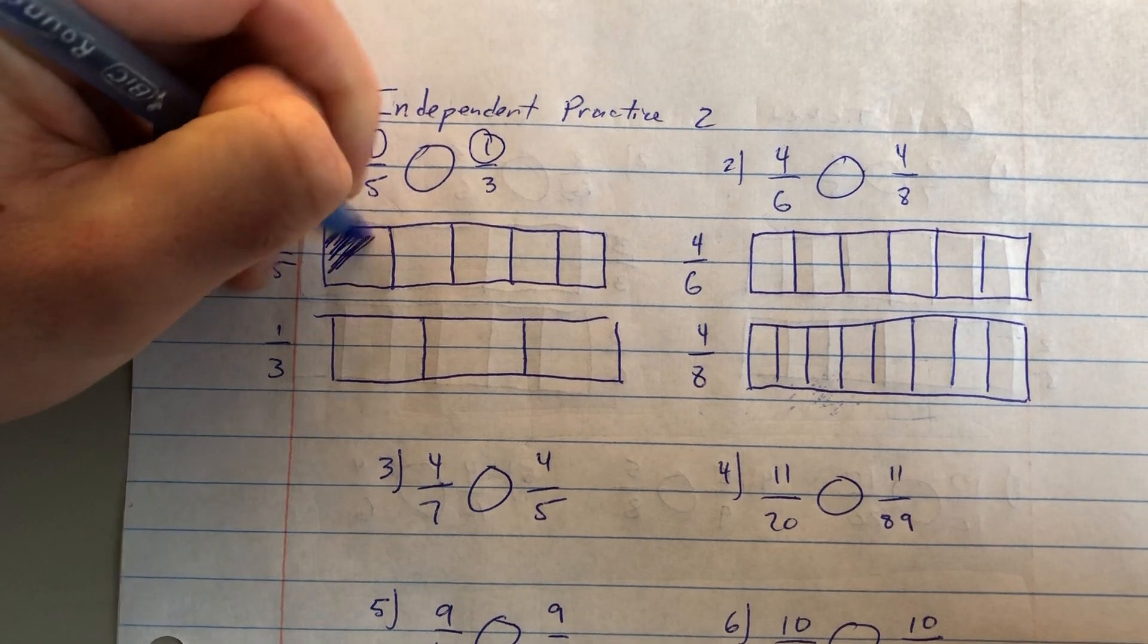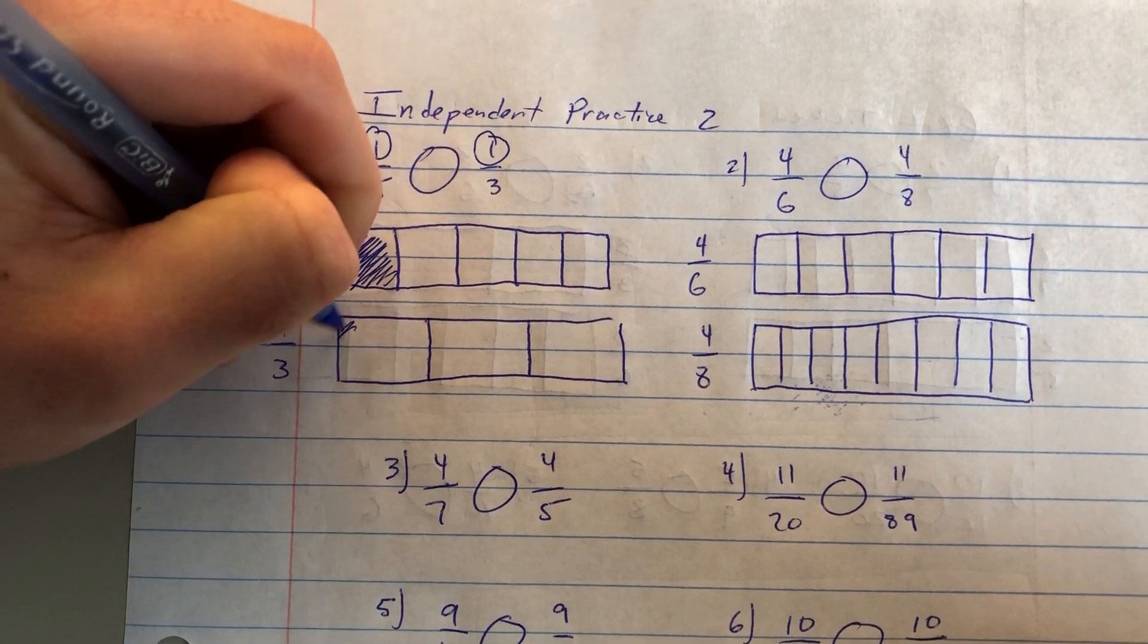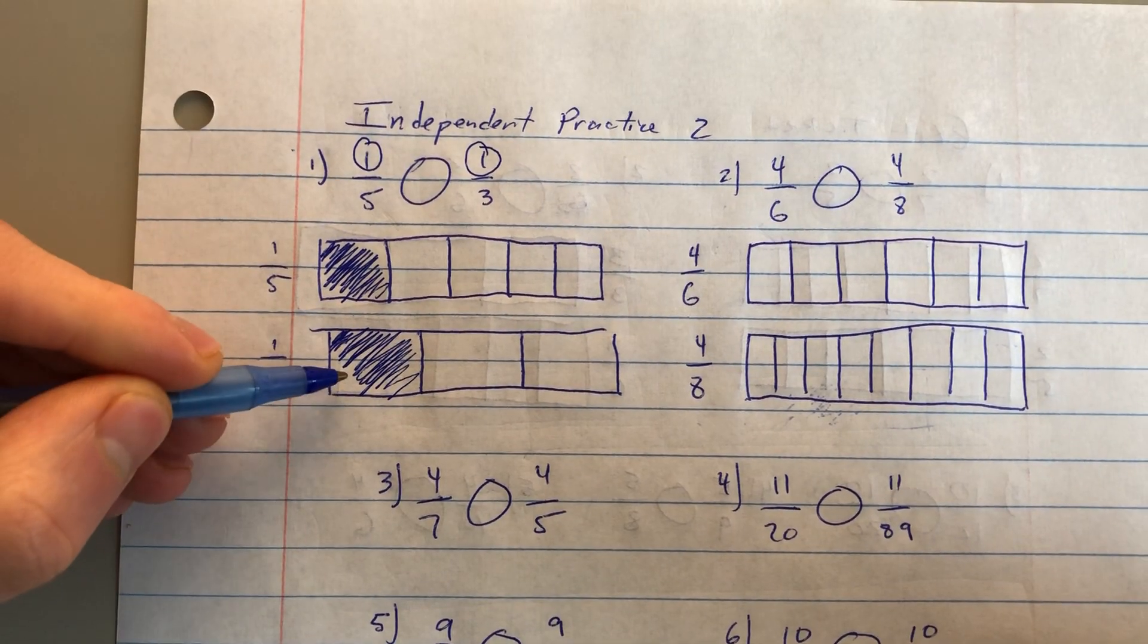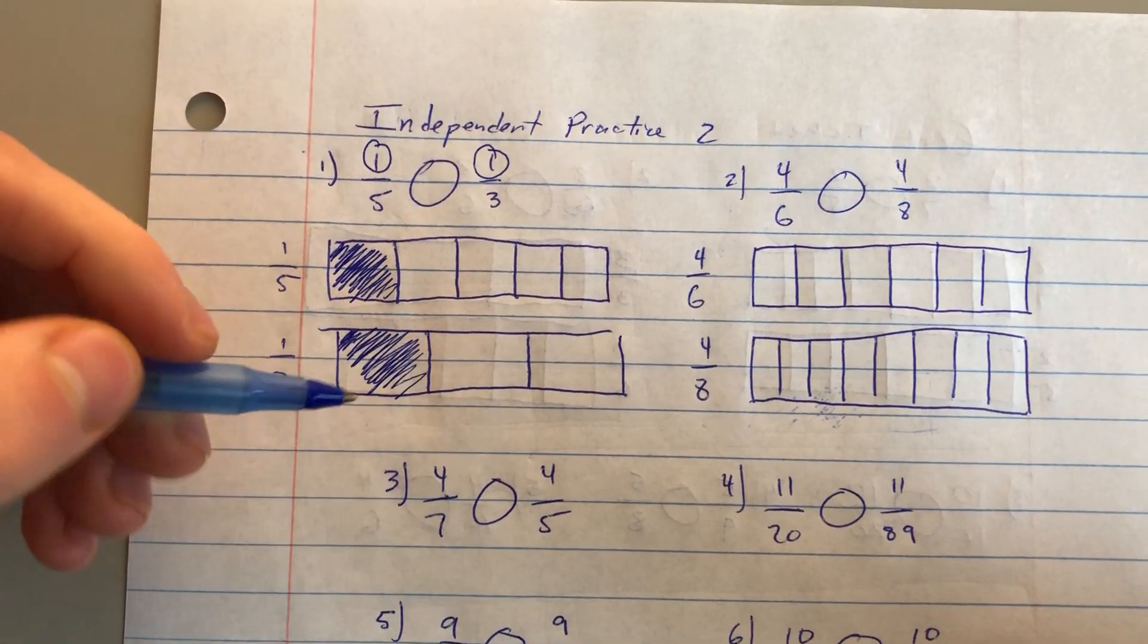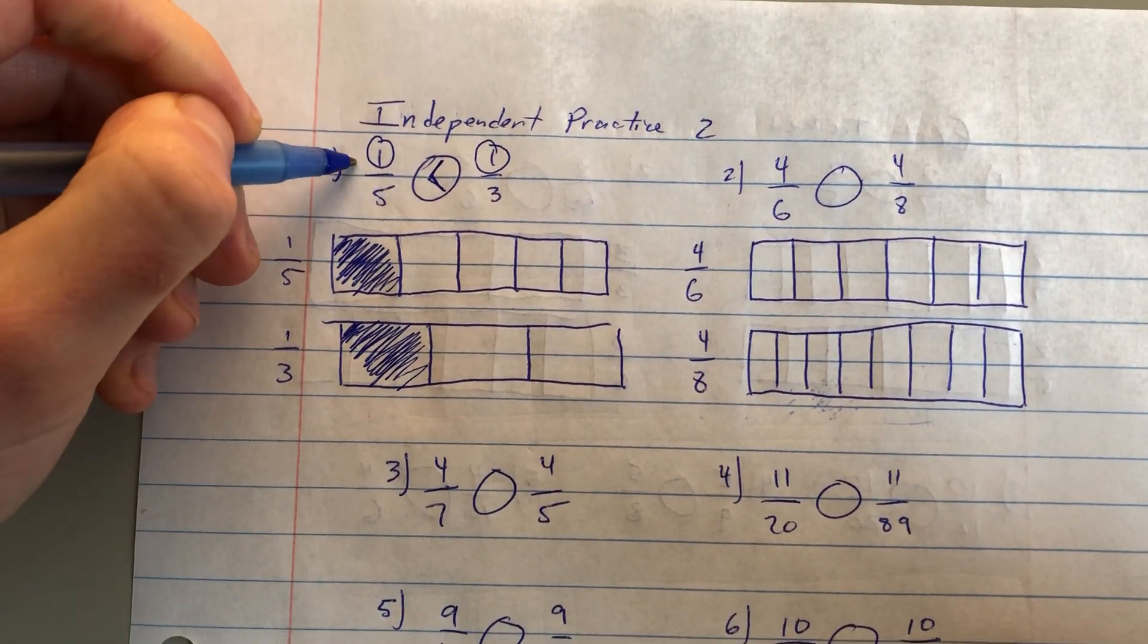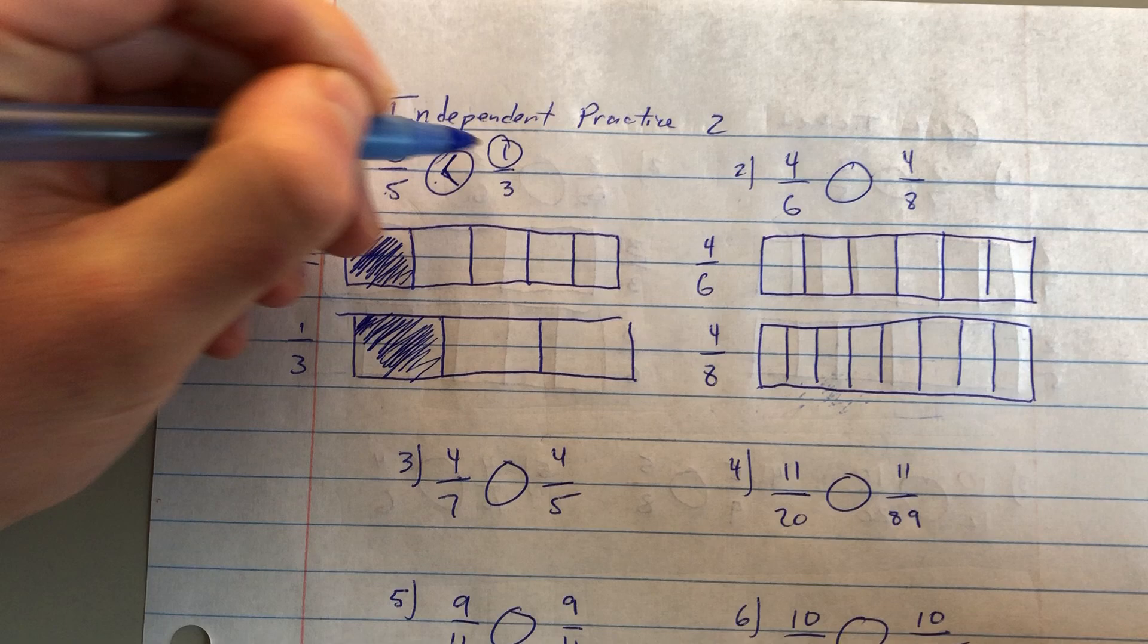Here, I will shade in one-fifth since my numerator is one, and I'll shade in one-third, and you can see very confidently that one-third takes up more of the whole, which means one-third is greater than. If we read this sentence, we'd say one-fifth is less than one-third.